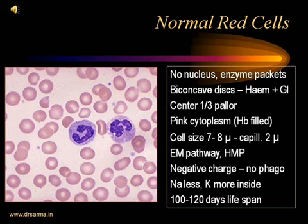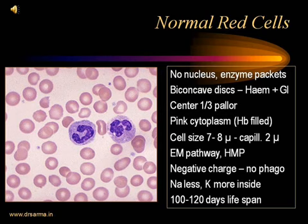RBCs are negatively charged and so are not available for phagocytosis by phagocytes. There is less sodium and more potassium inside the RBC. The normal lifespan of the RBC is 100 to 120 days.